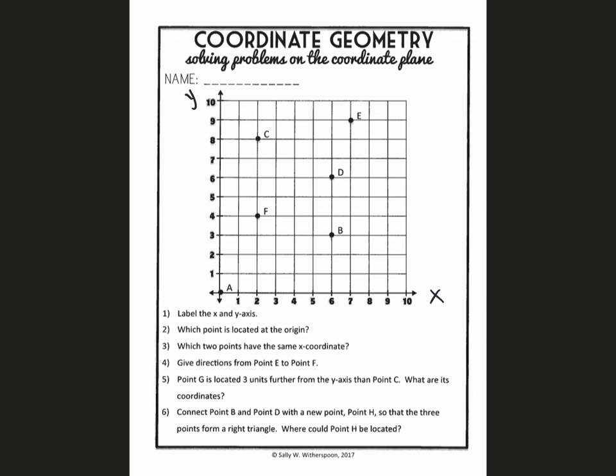So number two, which point is located at the origin? If you remember, Ms. Coker told us yesterday that the origin is right here where the two lines meet. And so that again is called the origin. And it's usually labeled with a zero, zero. And there is a letter A there. So we would say that A is located at the origin.